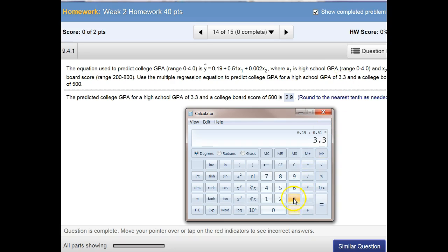So I put in 3.3. The rest of the equation plus 0.002 times their score on this college board test. 2.3 and this college board score of 500, so times 500 equals 2.873, round to the nearest tenth. So 2.873 rounded to the nearest tenth would be 2.9.